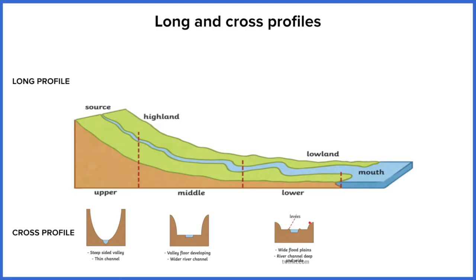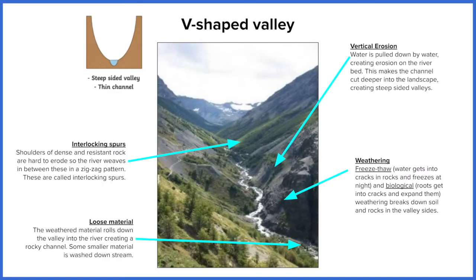So let's have a look at a V-shaped valley, which we find in the upper course of the river. From this photograph — which you've also got in your revision guide — you can see the V-shape we're talking about here. Steep sides and the actual base of the valley is not very flat; it comes to a point. The base of that valley has the river flowing in it. The river isn't very deep and it isn't very wide.